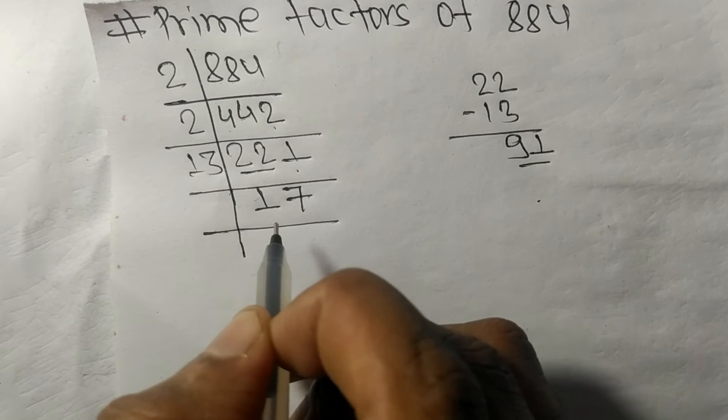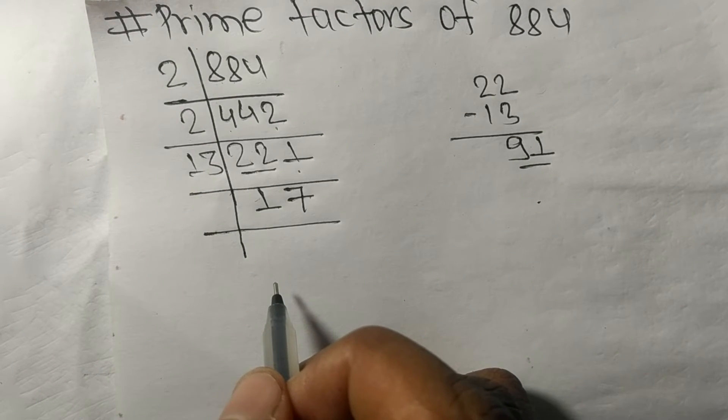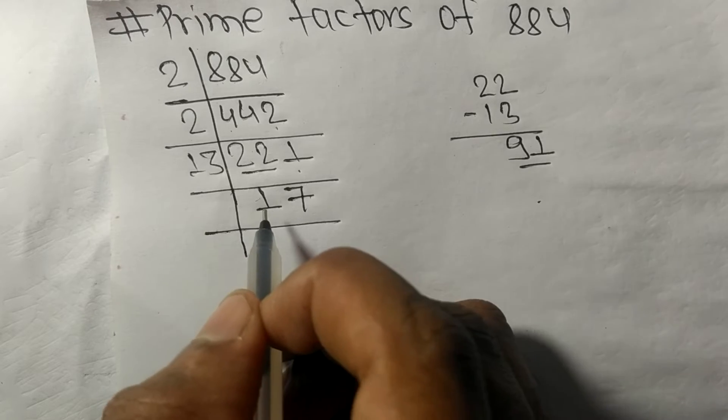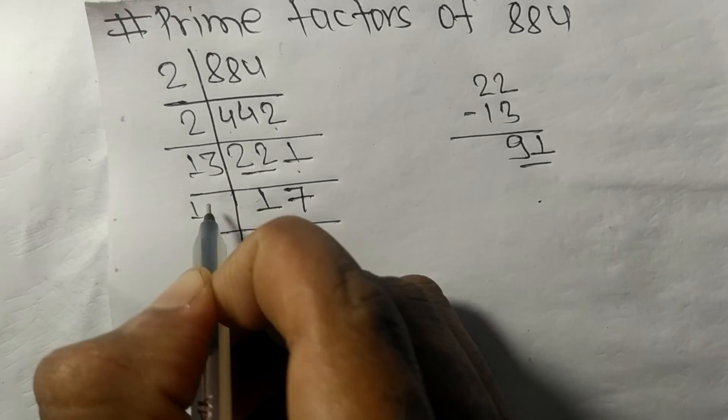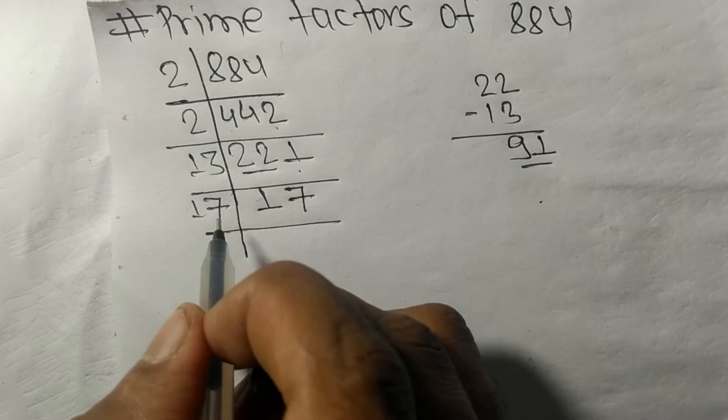Now we got 17, which is a prime number, so it is exactly divisible by 17 only. On dividing we get 1.